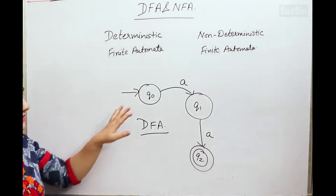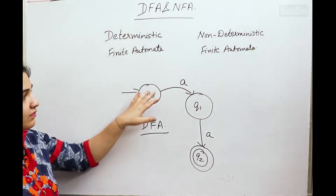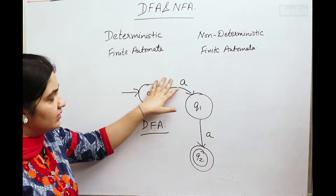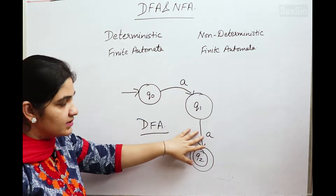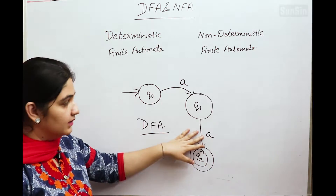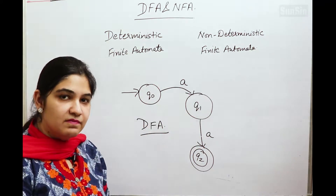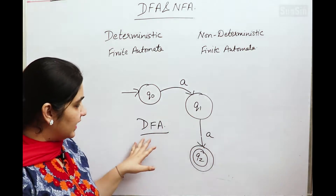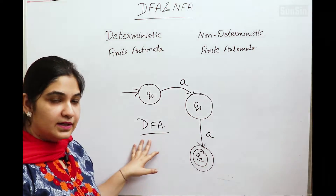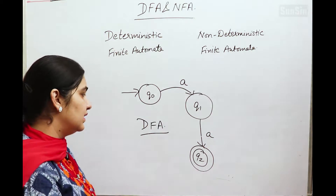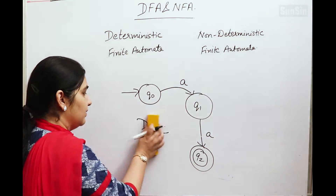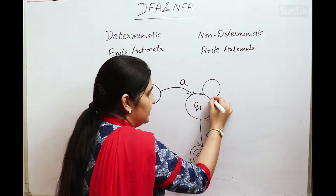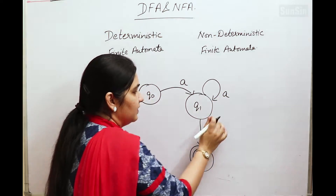From every state, for all the input alphabets and all the transitions given, we have exactly one next state. So that means it is a DFA — a Deterministic Finite Automata.